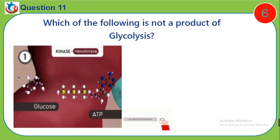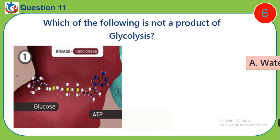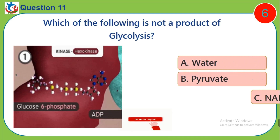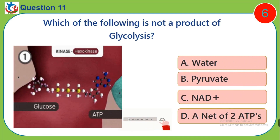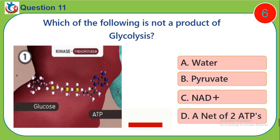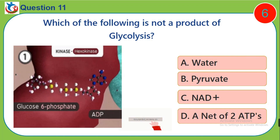Question 11. Which of the following is not a product of glycolysis? A, water. B, pyruvate. C, NAD+. D, a net of two ATPs.